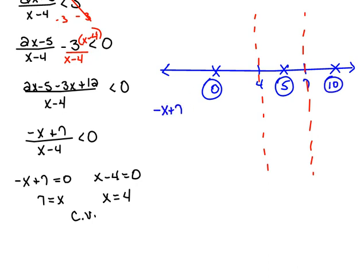Negative x plus 7. If we were to use a 0, this would be a positive number. If we were to use a 5 for x, this would be a positive number. And if we were to use 10 for x, this would be a negative number.